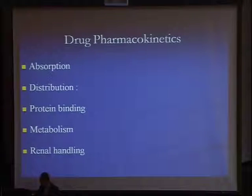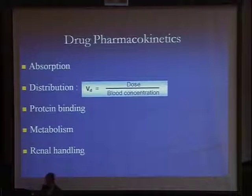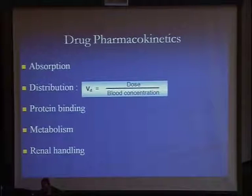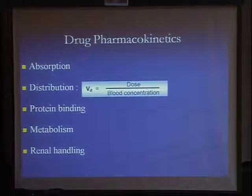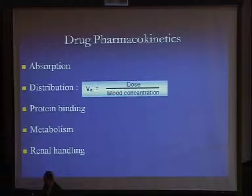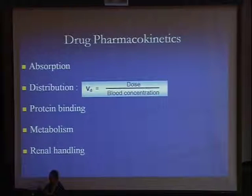So these are the steps: absorption, distribution — the volume of distribution will depend on the drug dose in relation to the blood concentration. If you have a large volume of distribution, this means that little amount of the drug will be present in the blood. So in this case, little drug will be dialyzable and probably the drug is going to be lipid-soluble. Then we have protein binding, and then metabolism and renal handling.